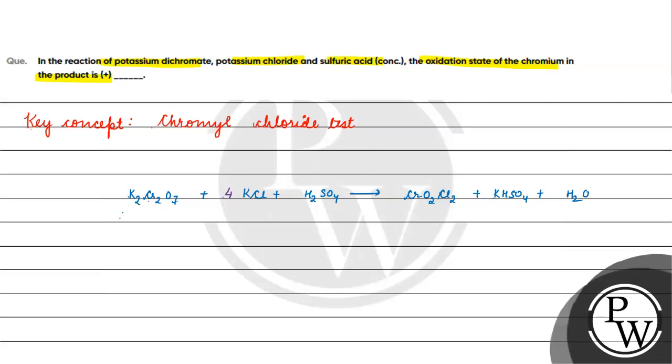K2Cr2O7 + 4KCl + 6H2SO4 → 2CrO2Cl2 + 6KHSO4 + 3H2O